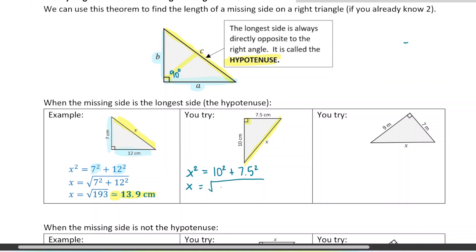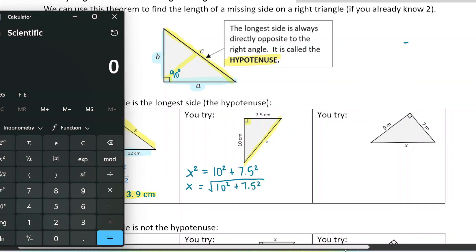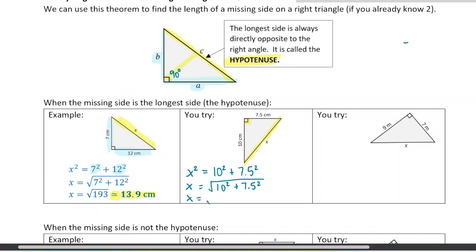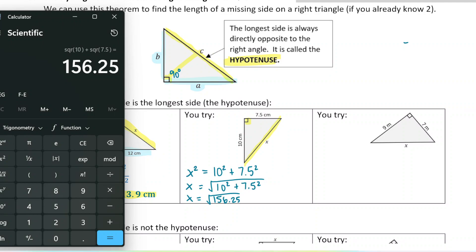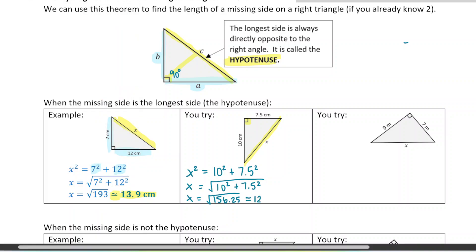If I want to find x, not x squared, I just take the square root of that. 10 squared plus 7.5 squared — 10 squared is 100, plus 7.5 squared gives 156.25. So that's what goes underneath the square root. When you take the square root, it evaluates exactly — so we can use an equal sign this time. When this happens, it's called a Pythagorean triple. This length here is exactly 12.5 centimeters.